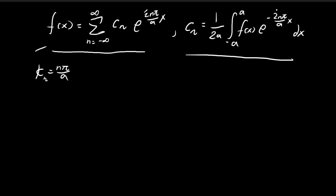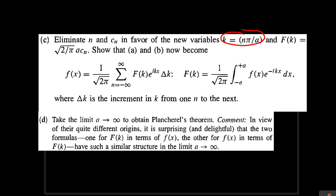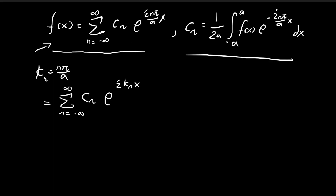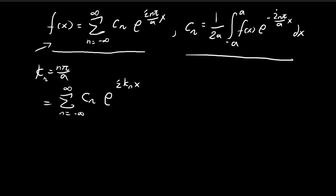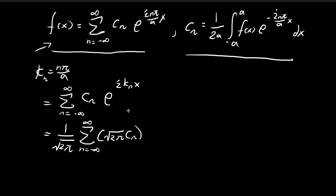I'm going to substitute this inside this expression. So f of x is equal to this infinite sum — we have c_n, and then we substitute k_n inside. Since we're trying to move from this expression into the alternative form, I want to bring out this 1 over the square root of 2 pi term from the summation. I can do that by adding it to the front and then multiplying back by the square root of 2 pi, so these cancel out to 1 and don't affect the overall value.